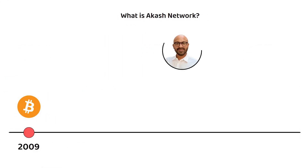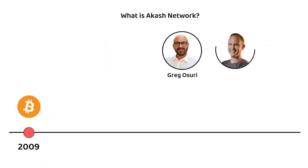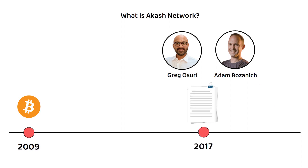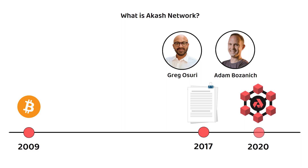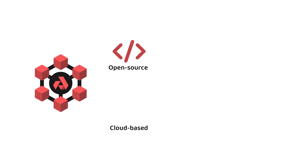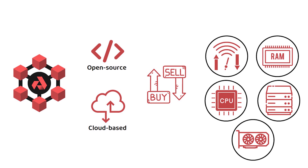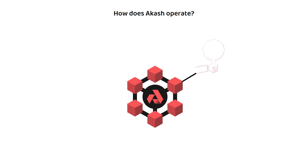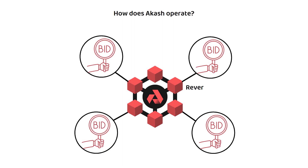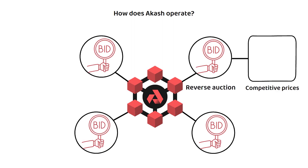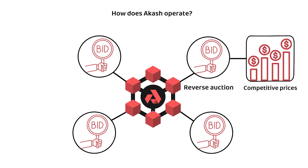Akash was founded by Greg and Adam, with their white paper being released in December 2017, and the Akash blockchain itself went live in 2020. At its core, Akash Network is an open source cloud-based marketplace that allows users to buy and sell computing resources. Akash operates as a decentralized public utility, which includes a reverse auction system that ensures prices are always the most competitive on the market.